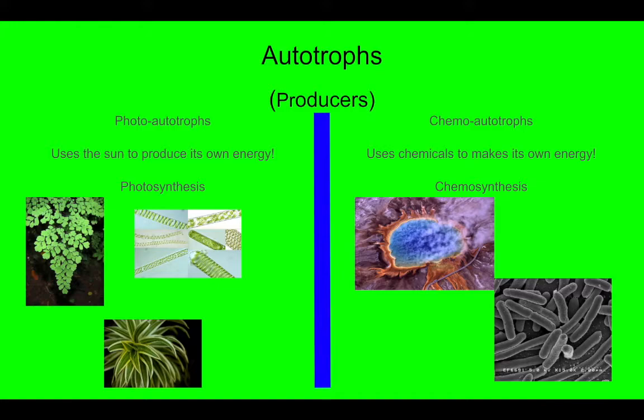Alright, so these are our autotrophs. Remember there are two types of autotrophs. They are both producers and one is the photoautotrophs which use the sun, and the other are chemoautotrophs which use chemicals.